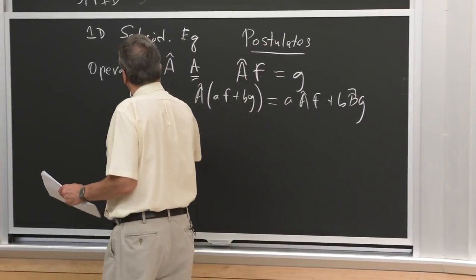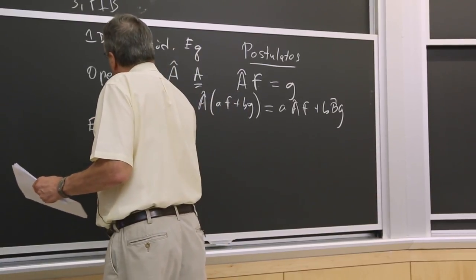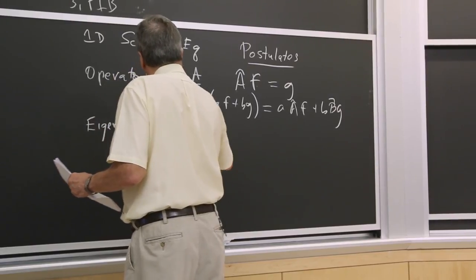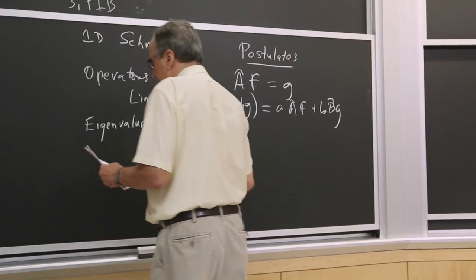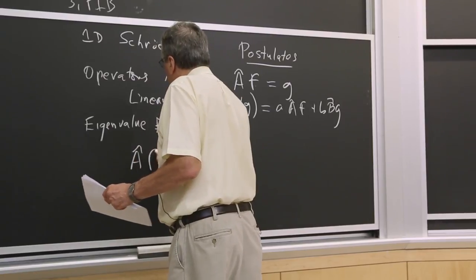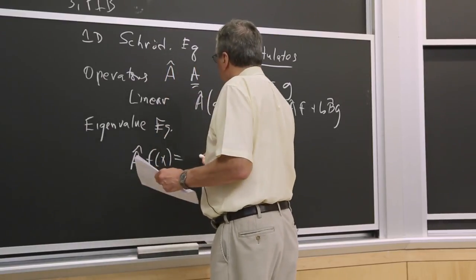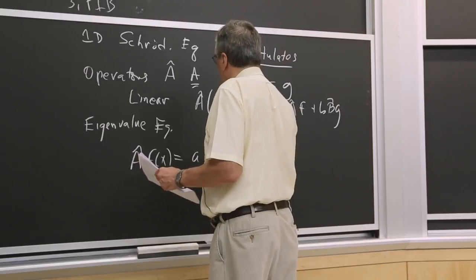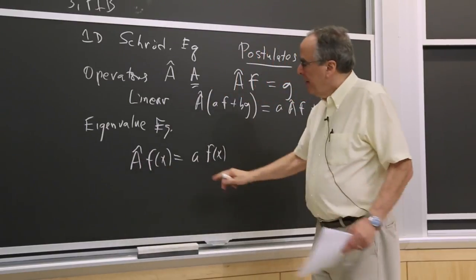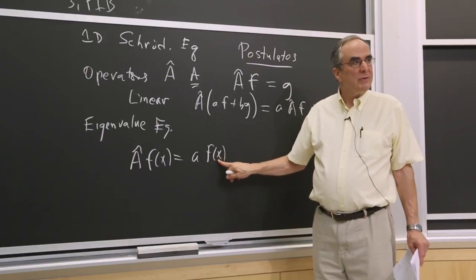We have eigenvalue equations. An operator operating on some function gives a number times the function back again. This number is called the eigenvalue, and the function is called the eigenfunction.